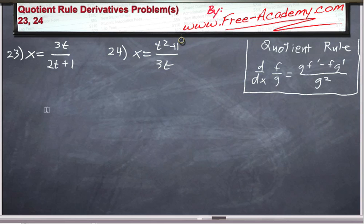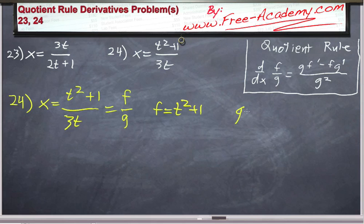So let's go on and let's do problem 24 to get a little bit more practice. x equals t squared plus 1 divided by 3t. We can do this two different ways. We are going to start out by doing our quotient rule, but then we're also going to do this with the power rule to demonstrate that it's exactly the same. So we have f divided by g. f is going to be equal to t squared plus 1, g is going to be equal to 3t. f prime is equal to 2t, g prime is equal to 3.